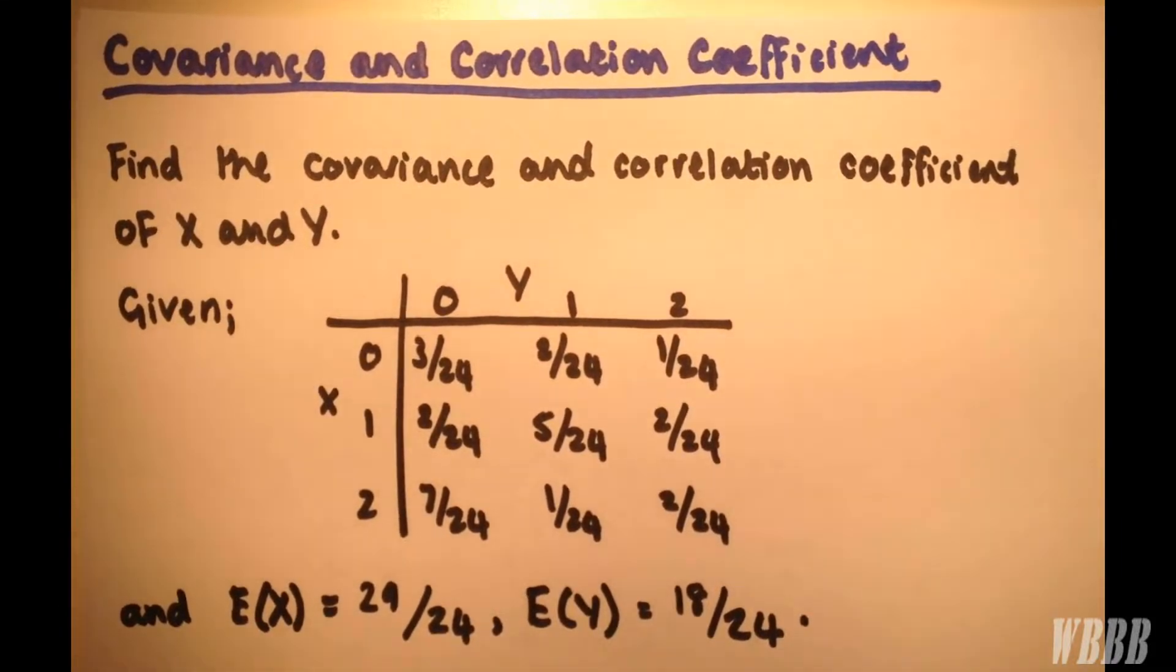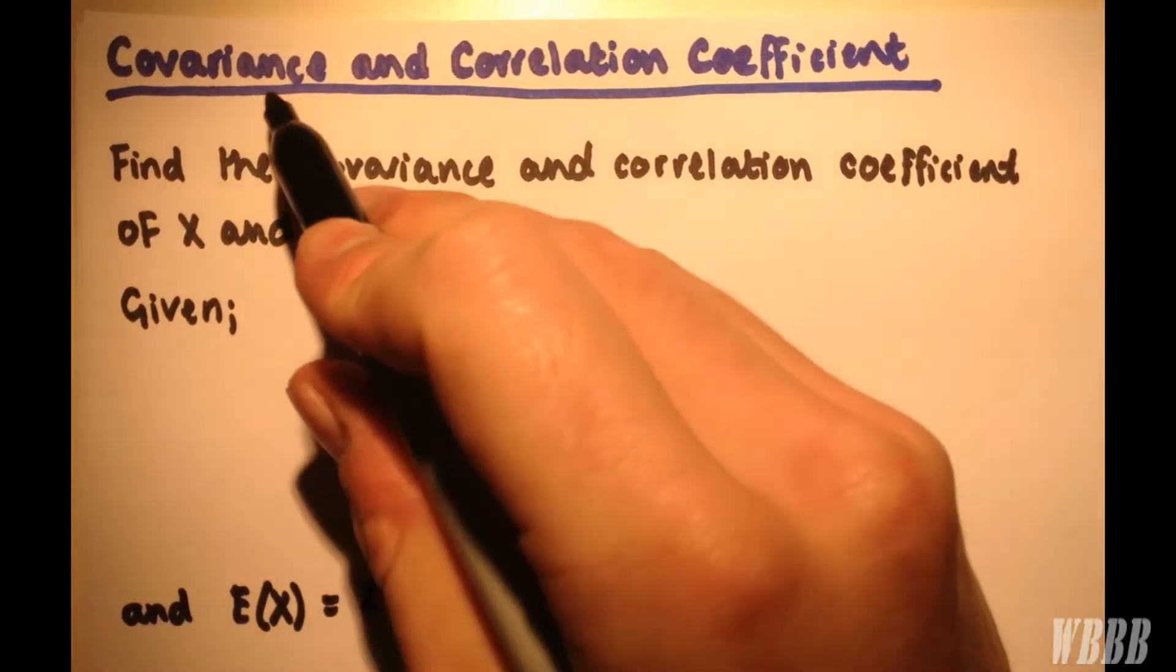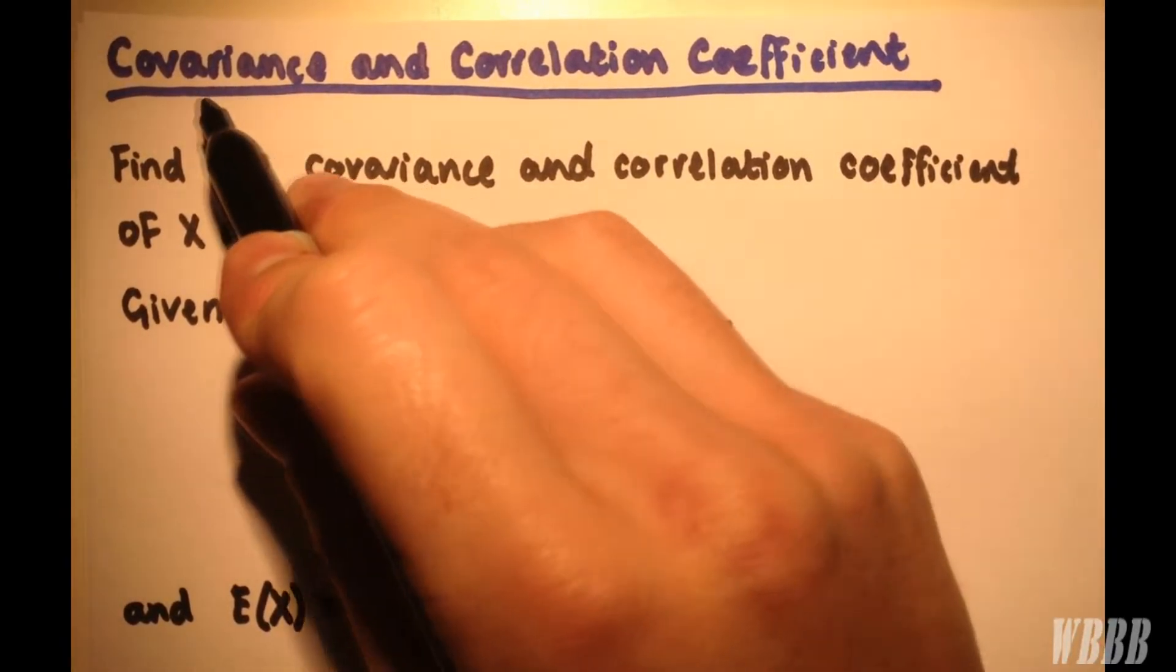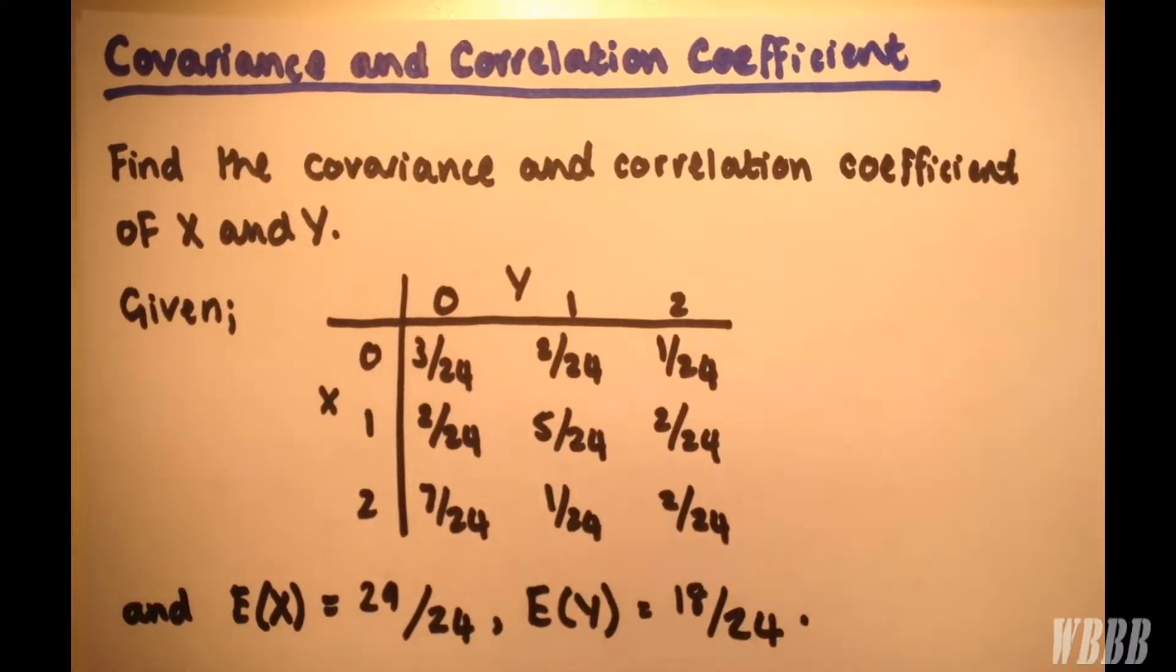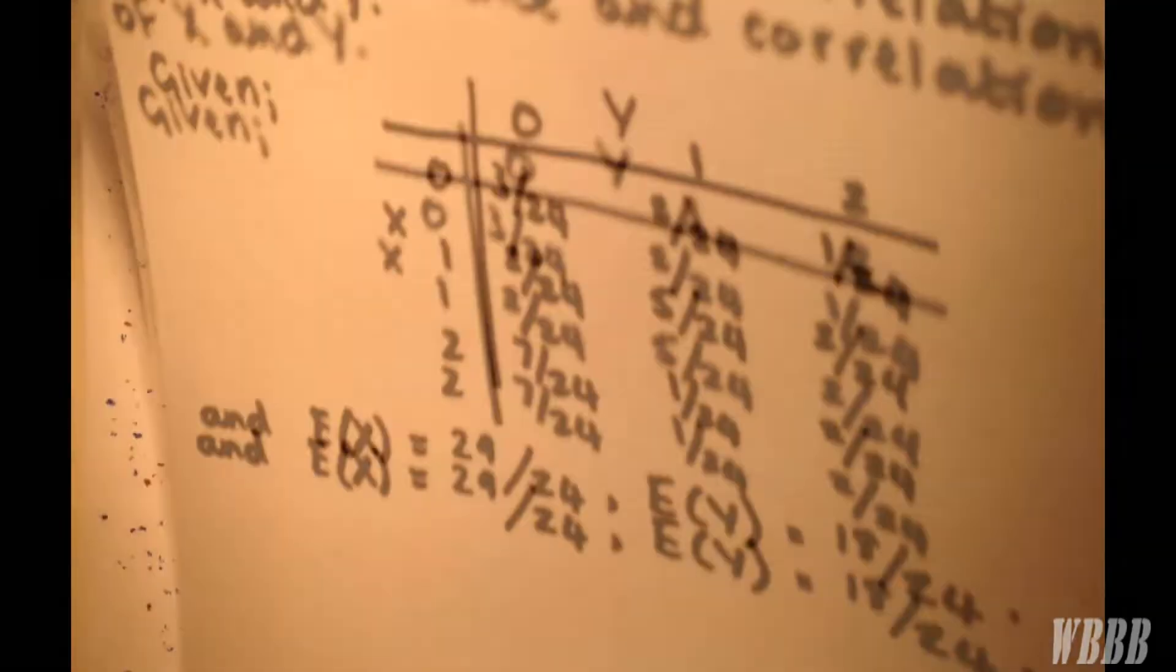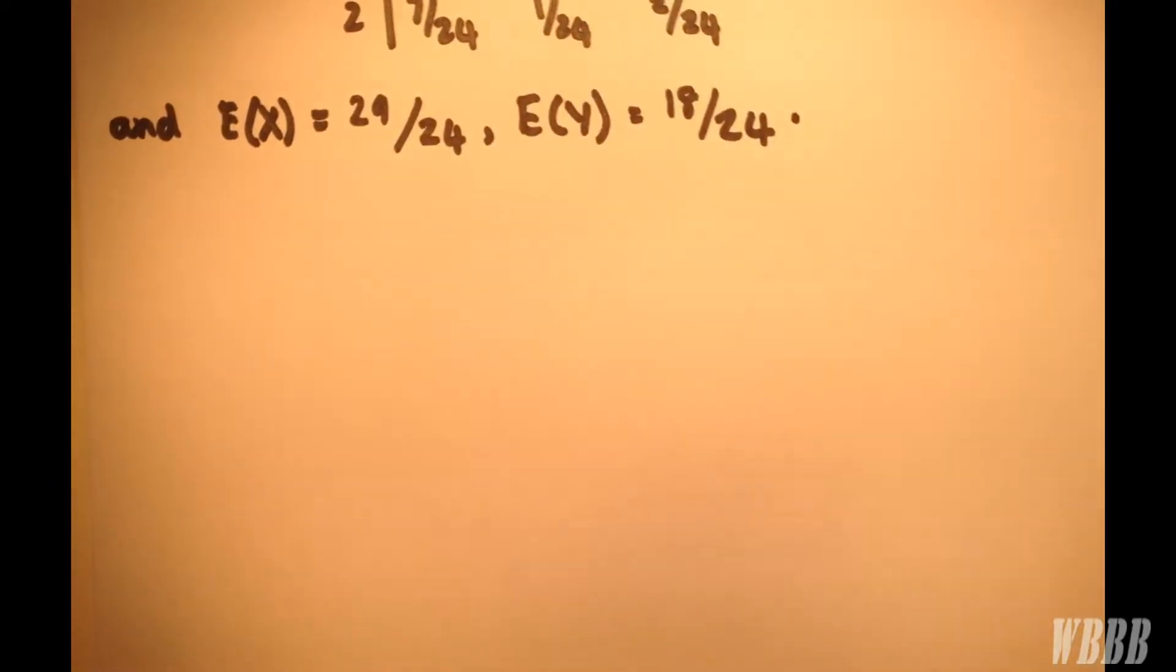Welcome to the final part of the mini-video series on joint probability distributions. In this one we're going to have a look at an example where we work out the covariance and then the correlation coefficient of X and Y.